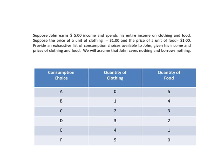In this way we can write down consumption choices D, E, and F. This table provides an exhaustive list of consumption choices available to this person given income and prices.